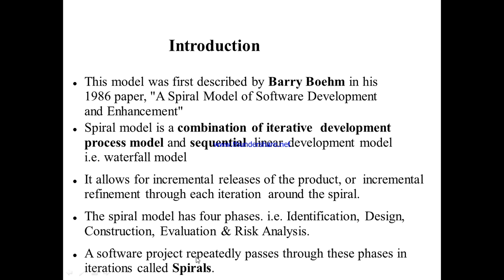This model was first described by Barry Boehm in his 1986 paper 'A Spiral Model of Software Development and Enhancement.' In that paper, Barry Boehm invented the spiral model.